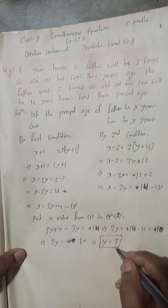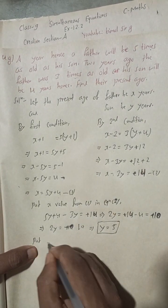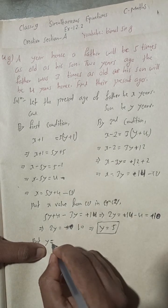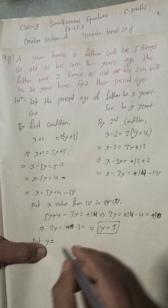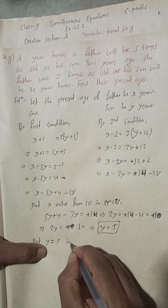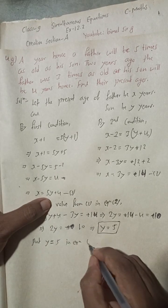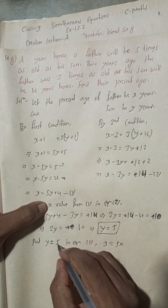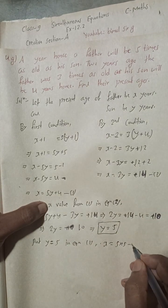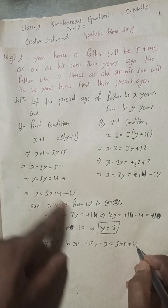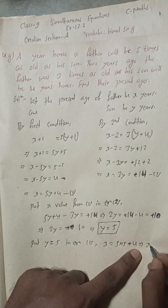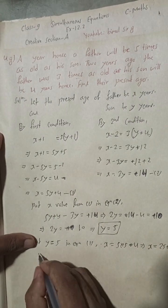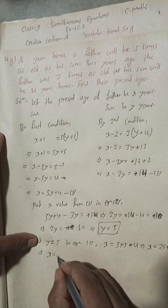Now putting y equals 5 in equation one: x equals five y plus four, so x equals five into five plus four. Five times five is 25, and 25 plus 4 gives x equals 29.